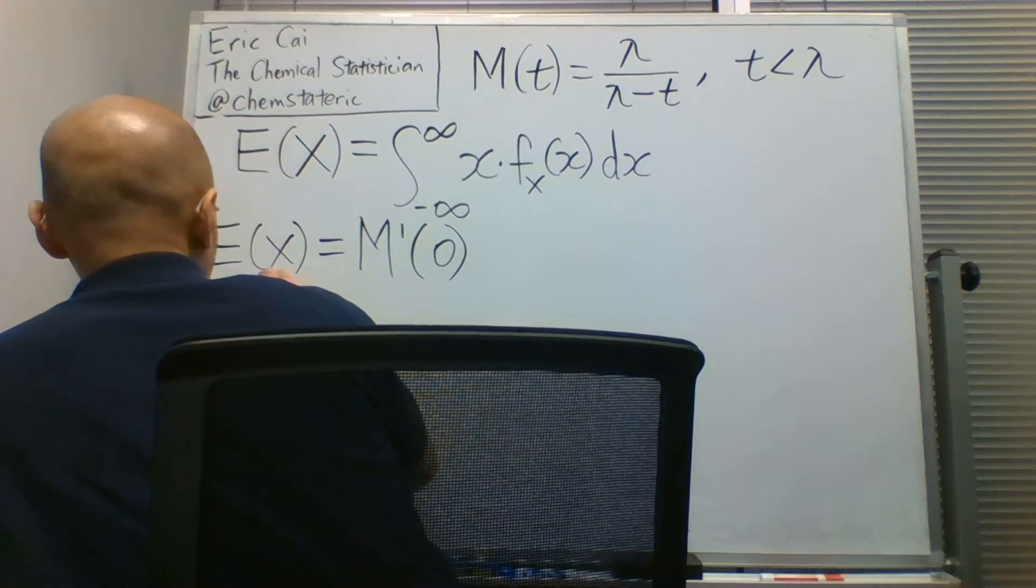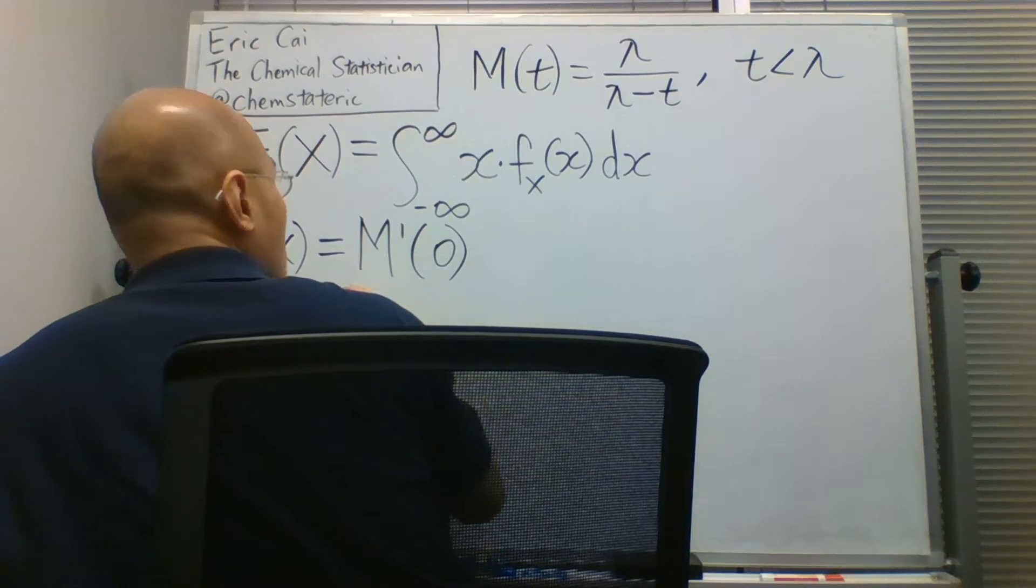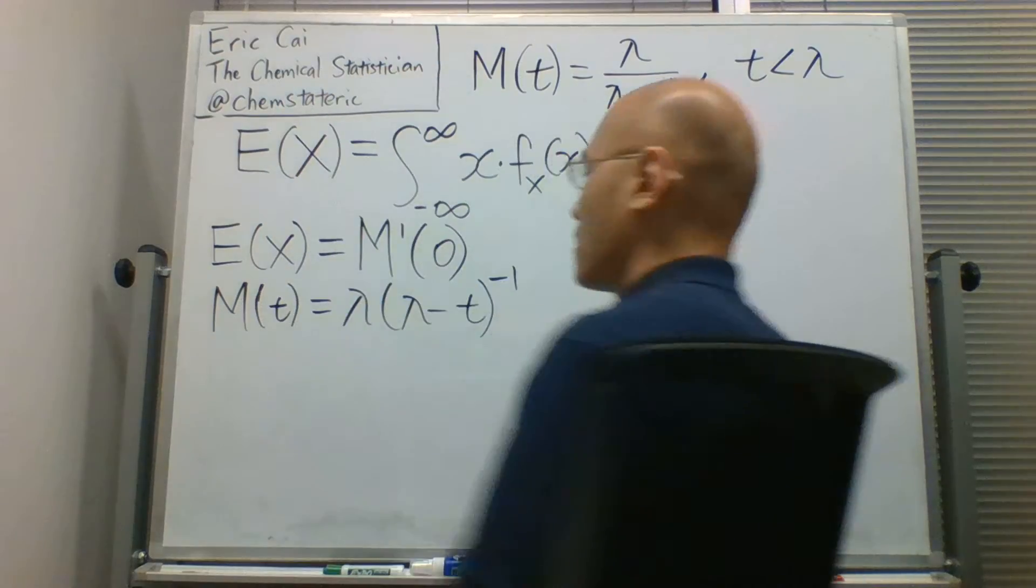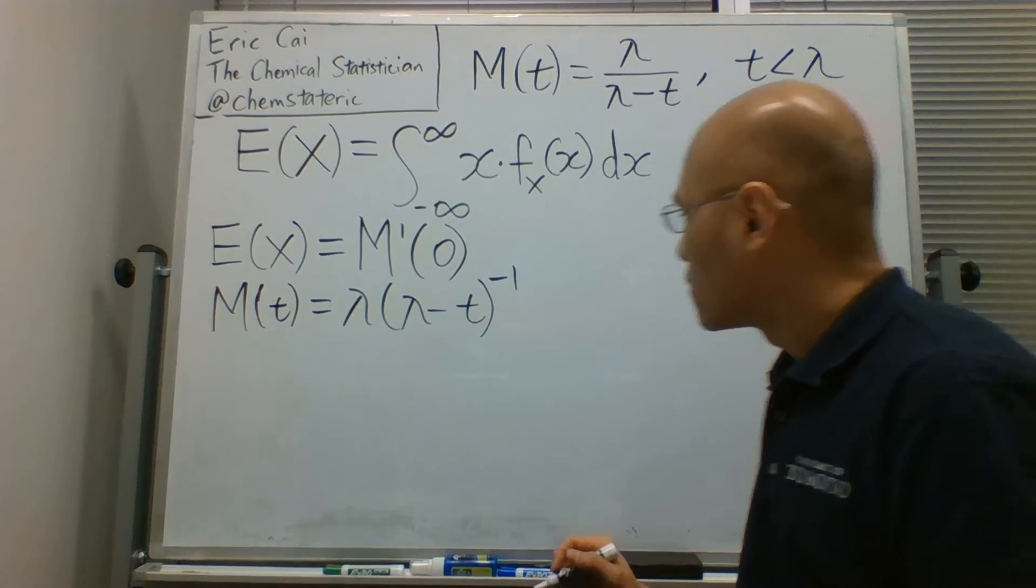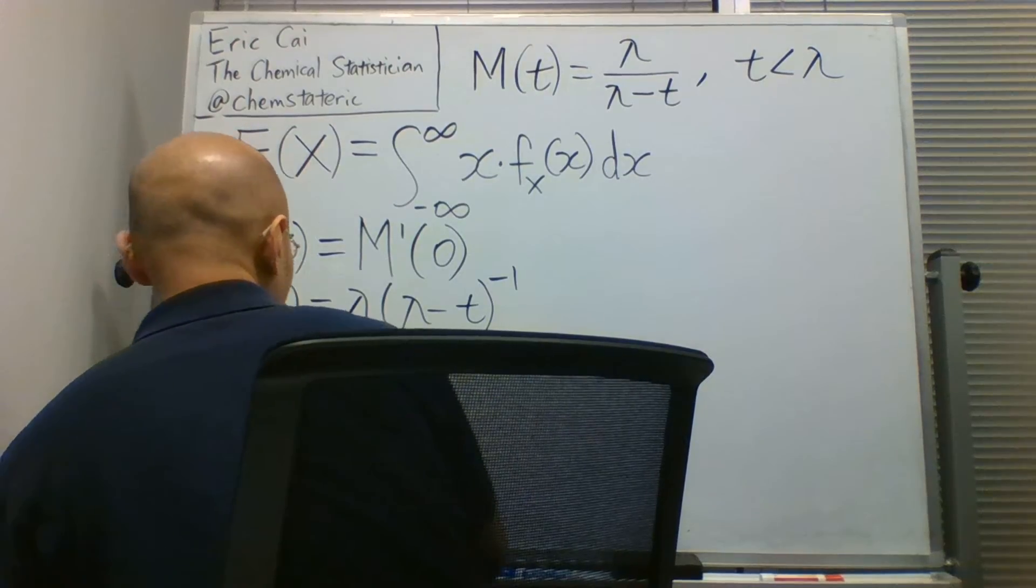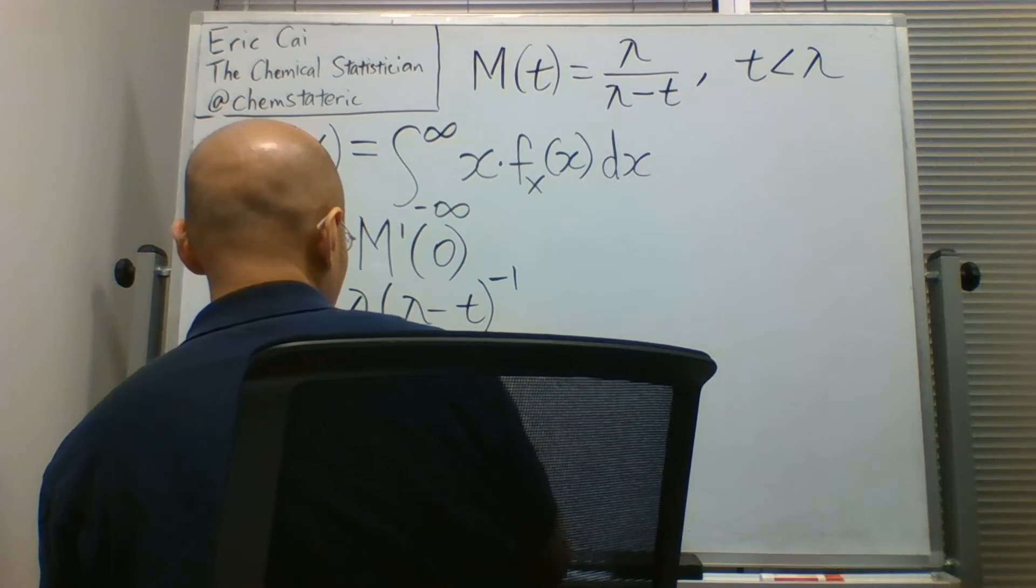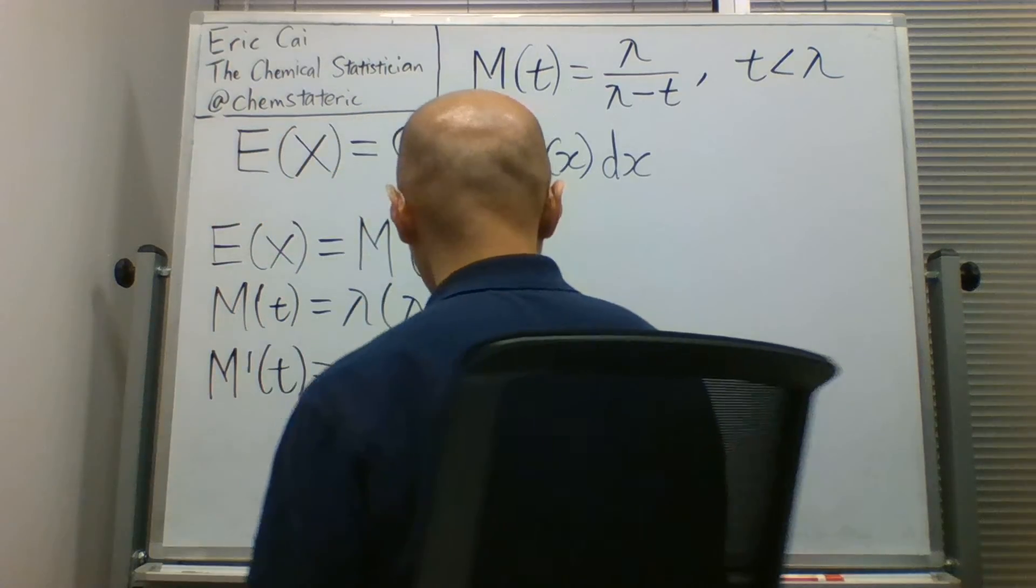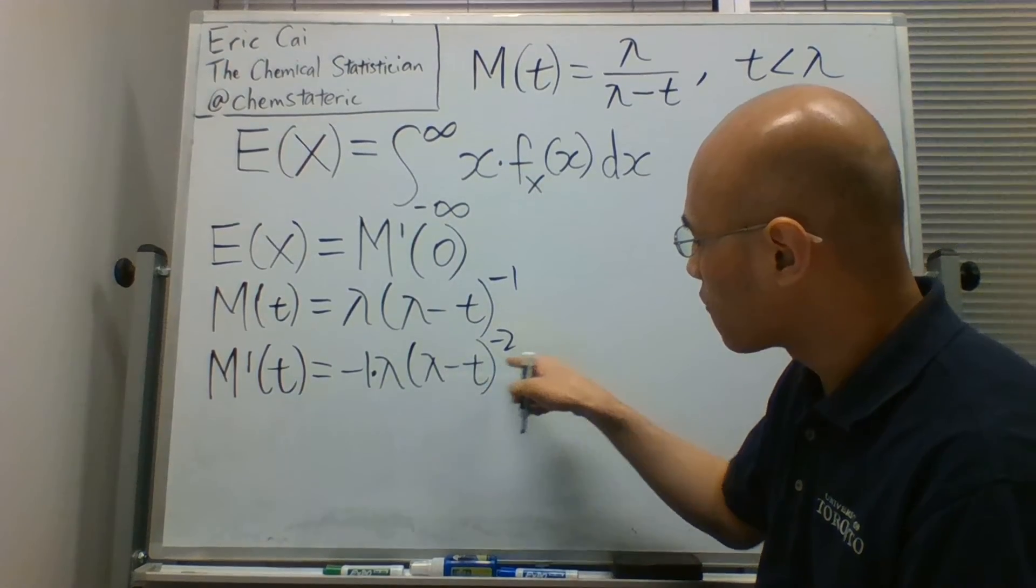The first derivative, well actually, let's rewrite the moment generating function like this, which will make the differentiation easier. So the first derivative of the moment generating function is simply dropping this exponent down, subtracting this exponent by one times negative two, and then applying the chain rule, we multiply the negative one for the t.